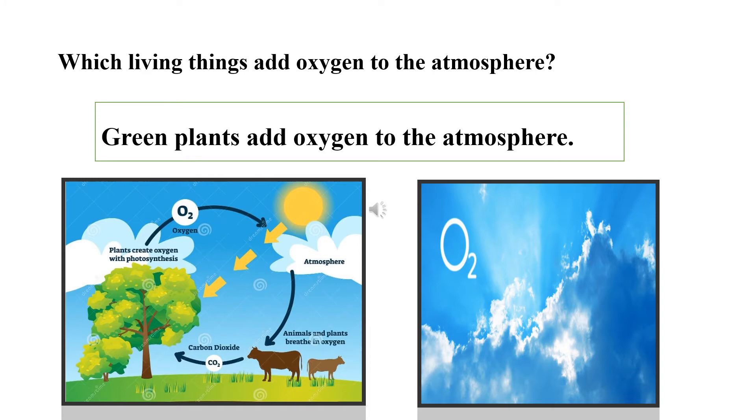But the correct answer is green plants add oxygen to the atmosphere. Only the green plants can add oxygen to the atmosphere, because plants create oxygen with photosynthesis. And they consume all the carbon dioxide from the air and produce oxygen.